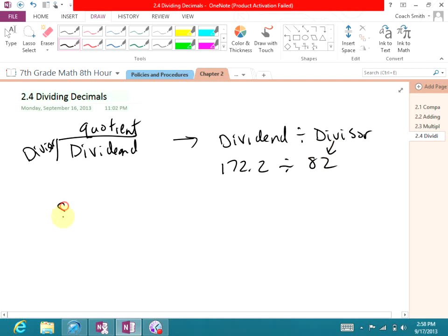82 is the divisor, so 82 goes on the outside of my bracket. On the inside of the bracket is 172.2.